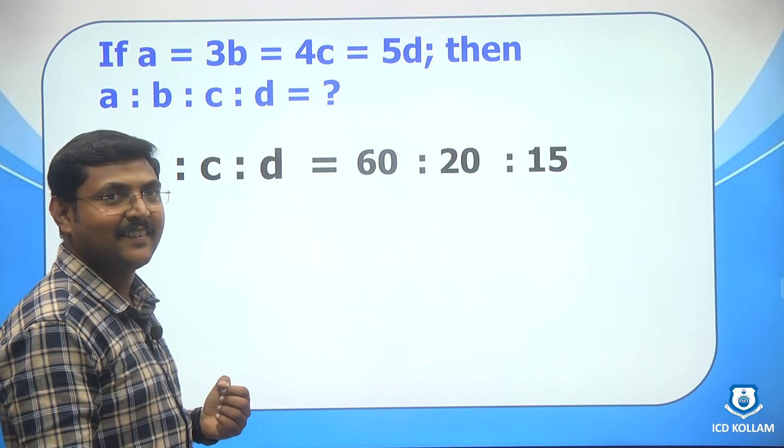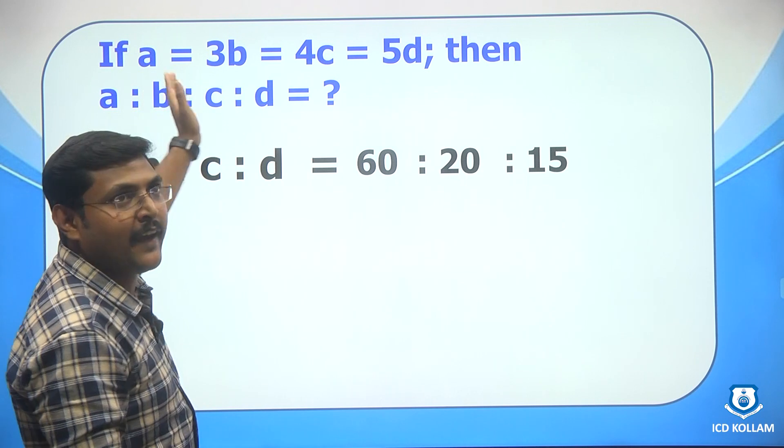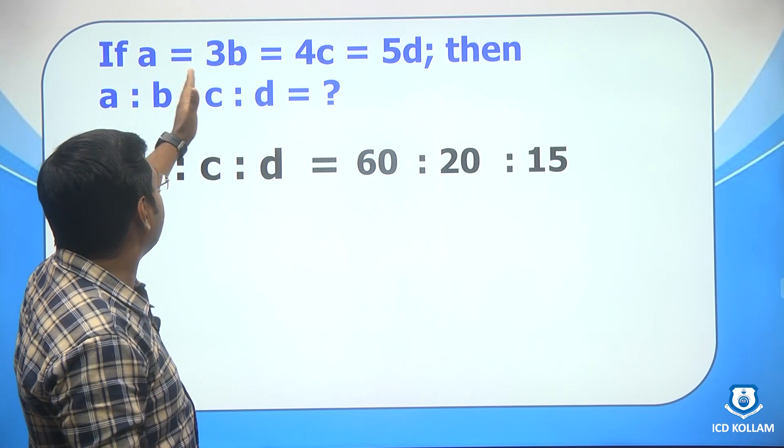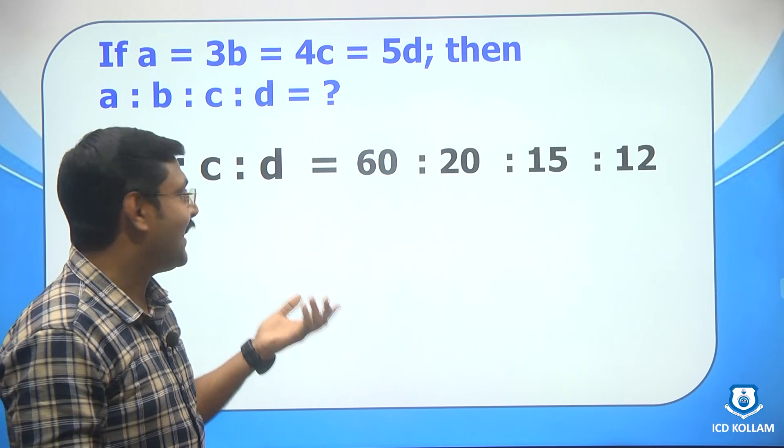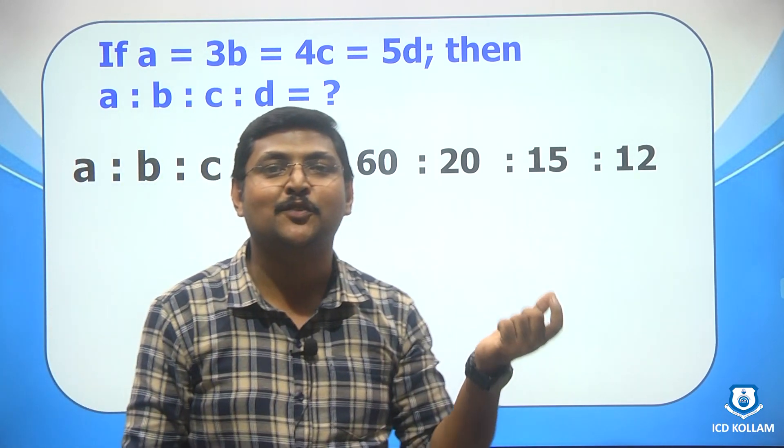And the last one it is d right. So we need to ignore that d and we need to consider the coefficient of a, b and c right. So 1 into 3, 3, 3 into 4, it is 12. So the answer it is 60 is to 20 is to 15 is to 12.